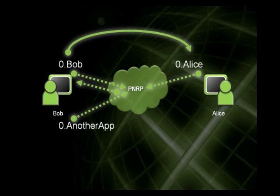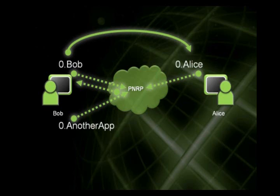Even if there are NATs in the way, PNRP handles this — symmetrical NATs kind of break it, but those are a bit harder to find nowadays and are older technology. The nice thing about PNRP is that it's very quick and responsive. As Alice and Bob come and go offline, I don't have to worry about propagation — state changes happen very quickly across the nodes that are online.